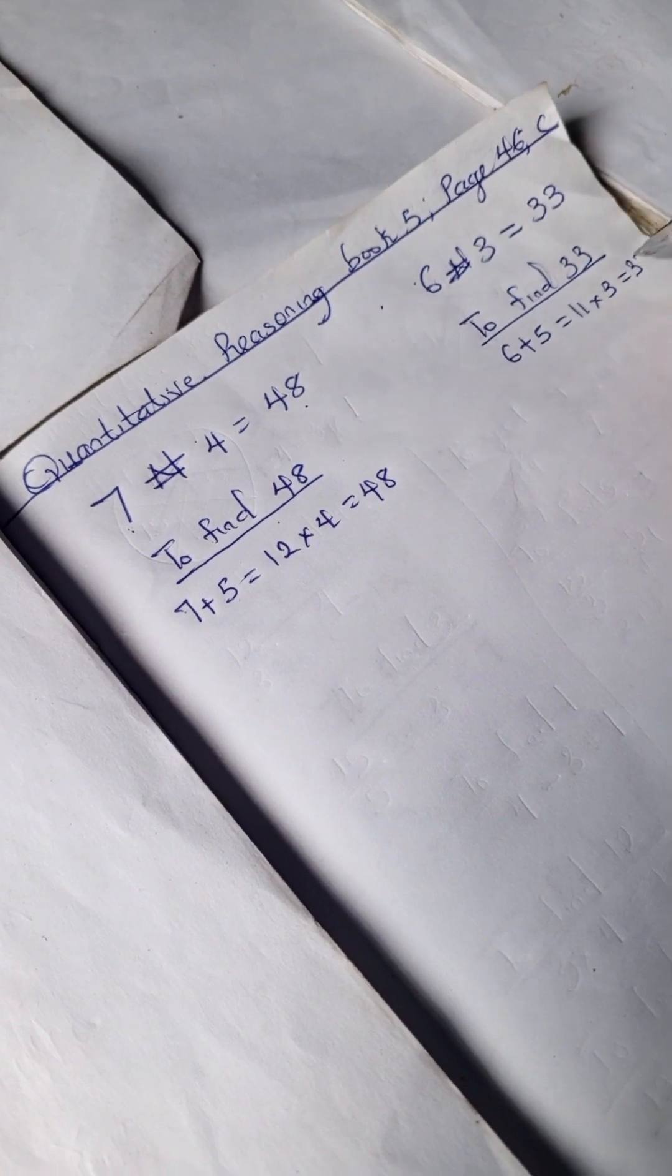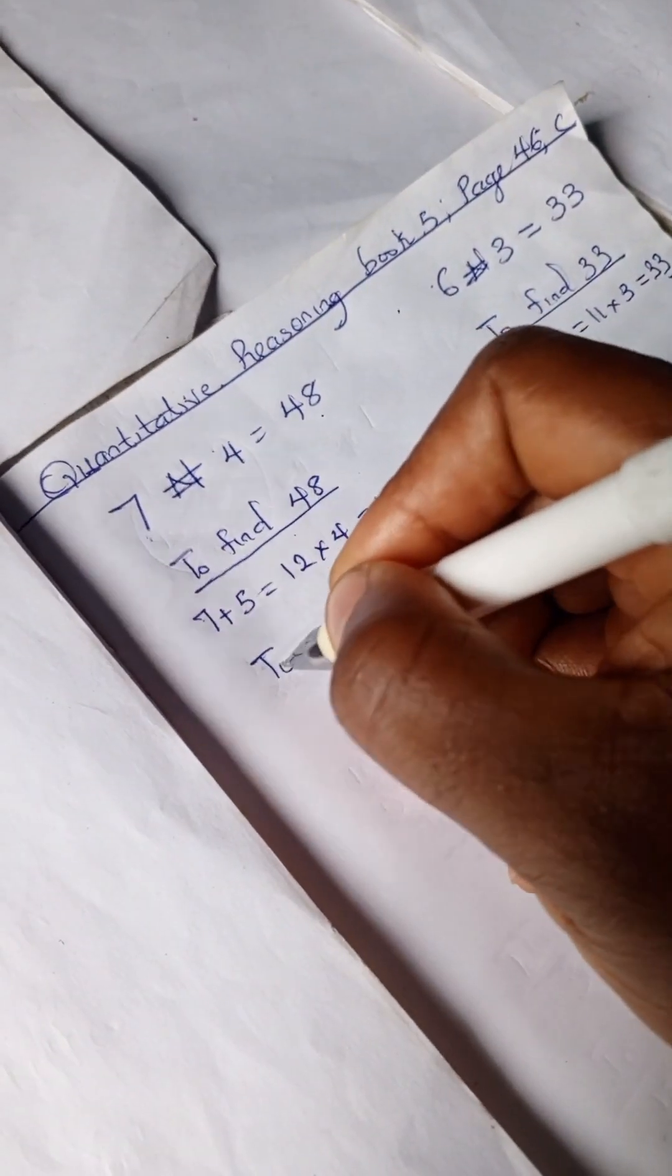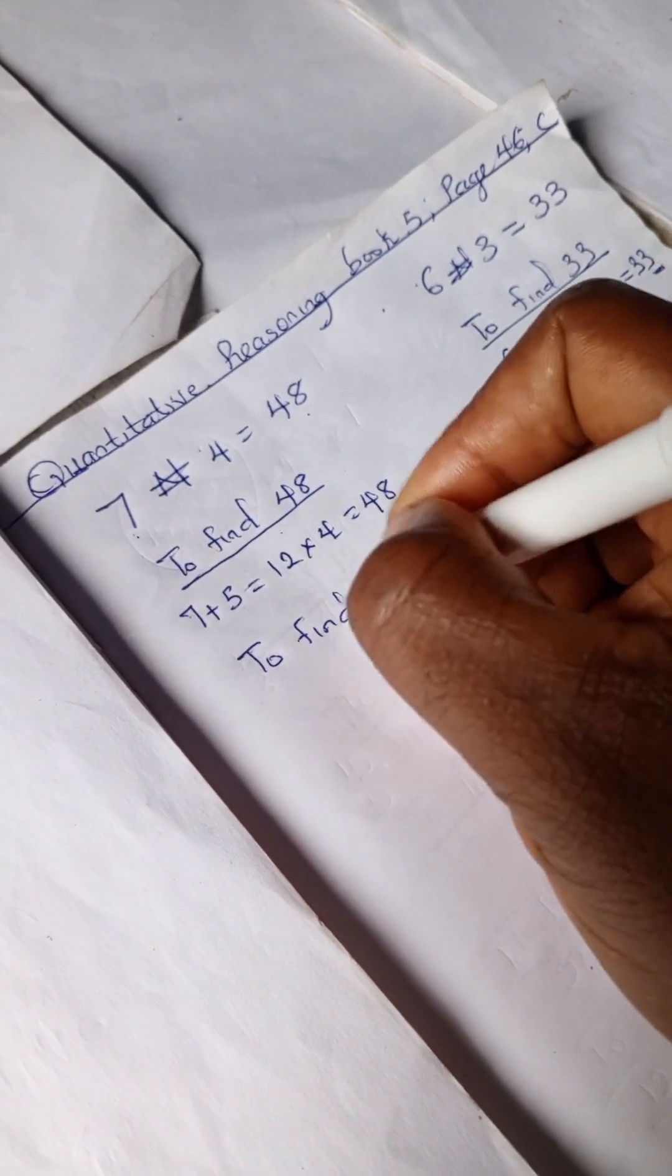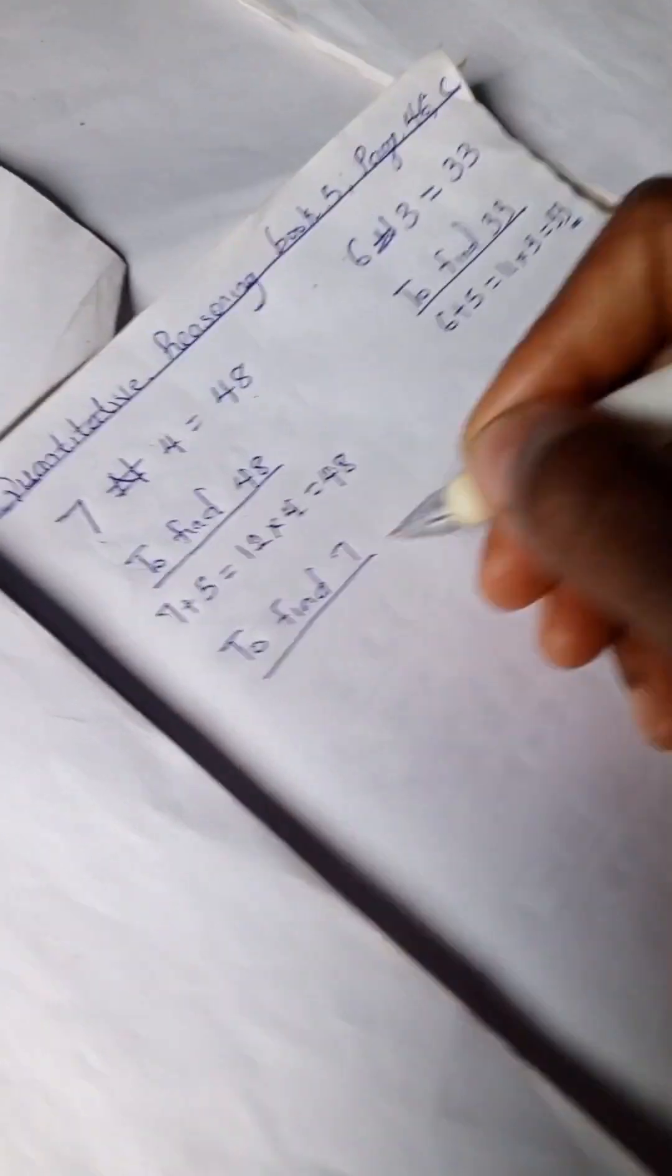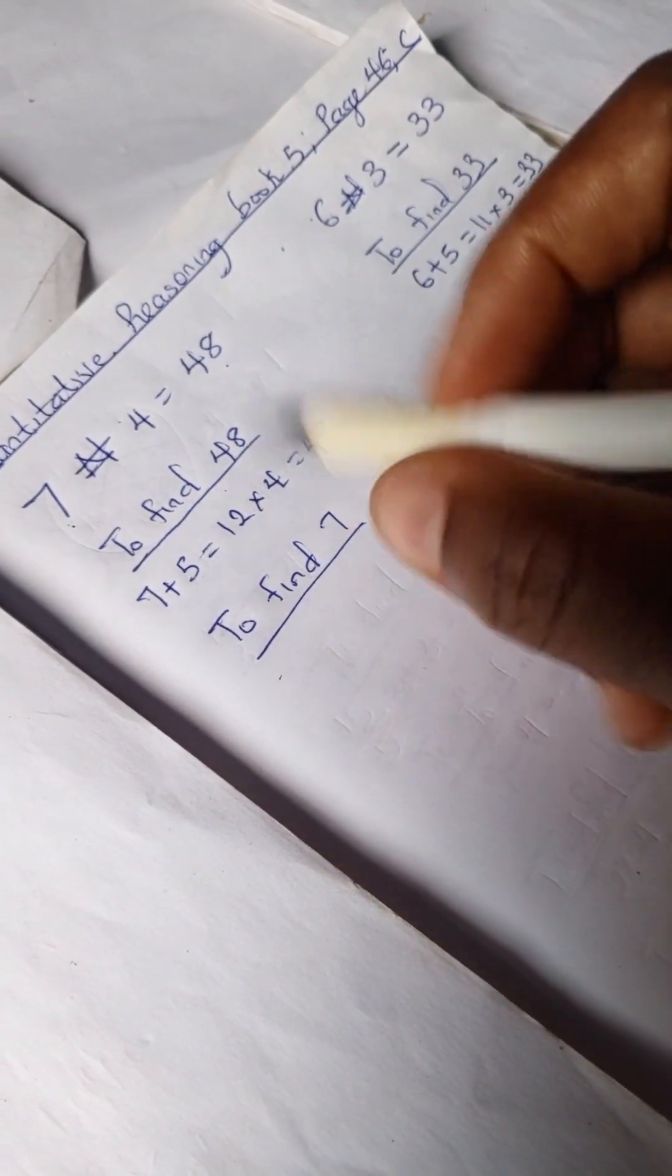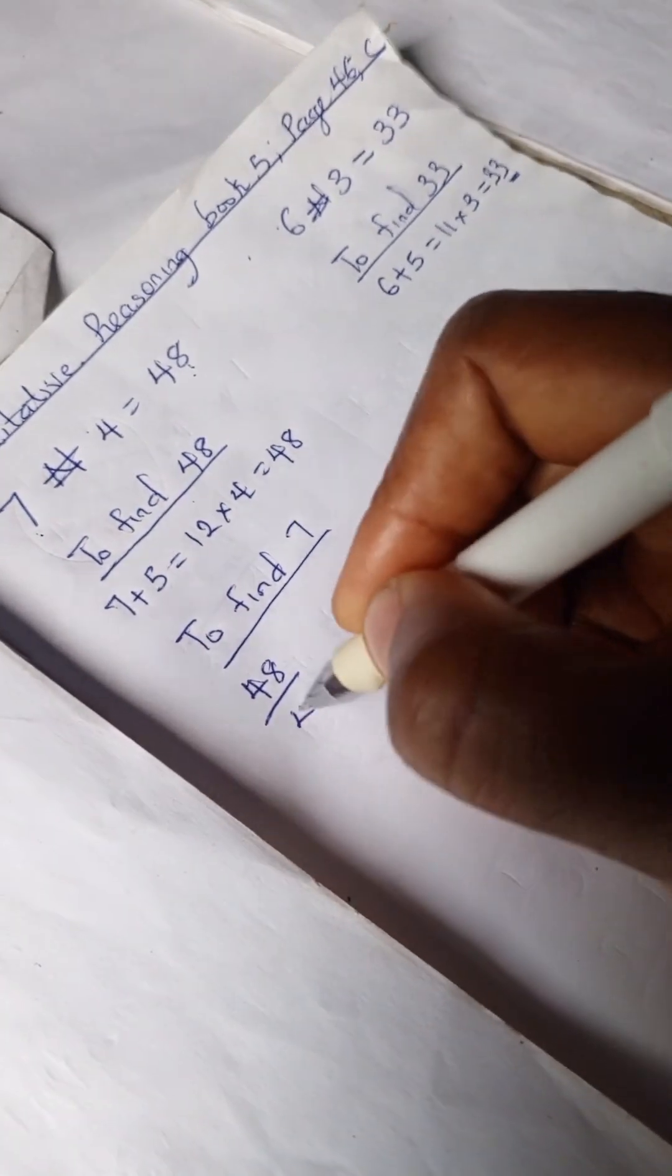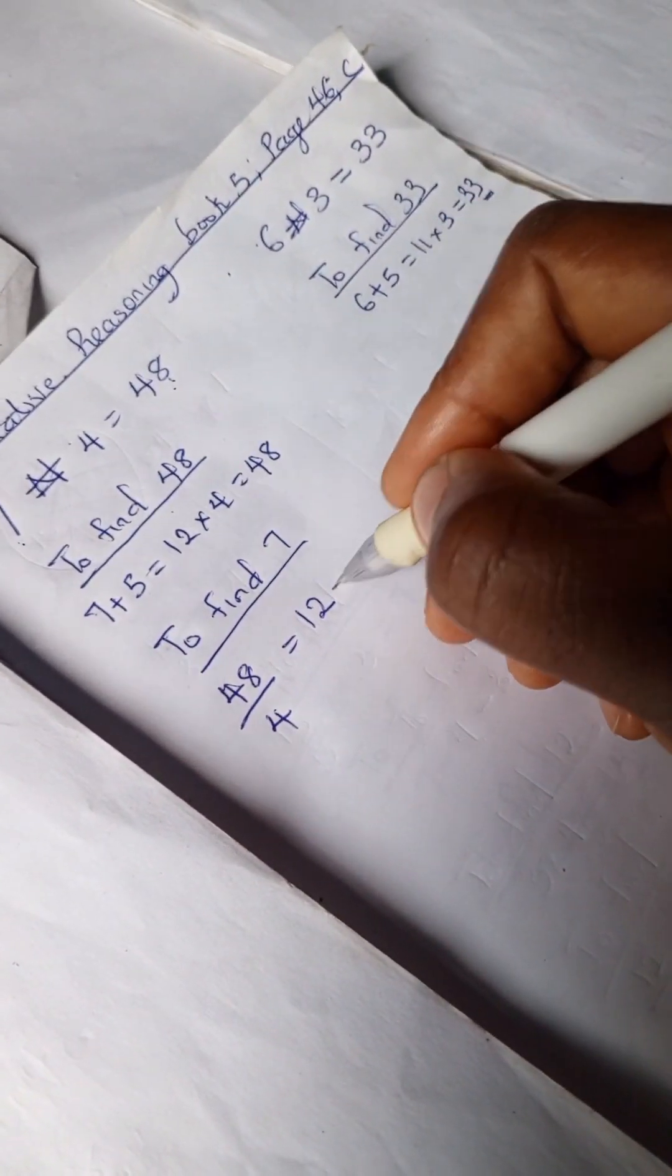To find 7, we have 48 ÷ 4 = 12, then 12 - 5 (the secret number) = 7.